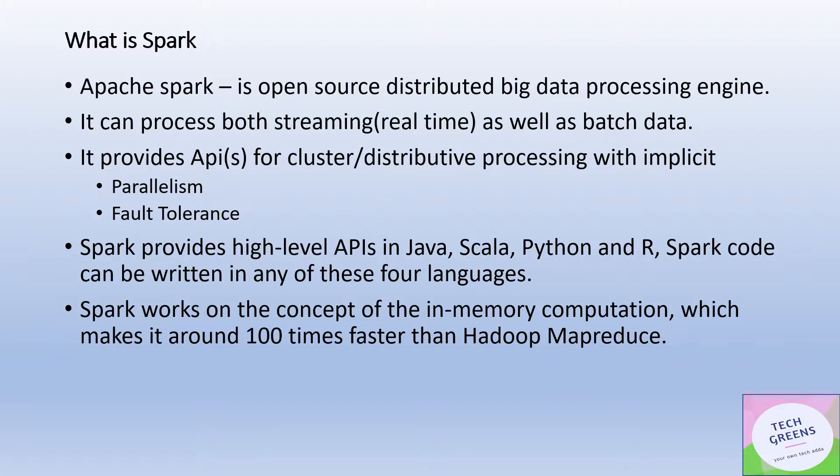Let's quickly see what Spark is — we have already discussed this in previous videos but let's go through it. Spark is an open-source distributed big data processing engine. It provides a common processing engine for both streaming and batch data, and provides parallelism and fault tolerance out of the box. Spark provides high-level APIs in four languages: Java, Scala, Python, and R.